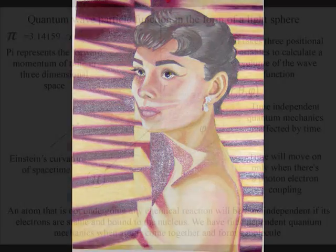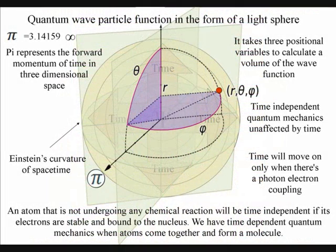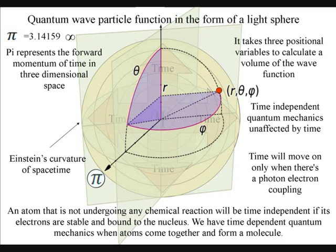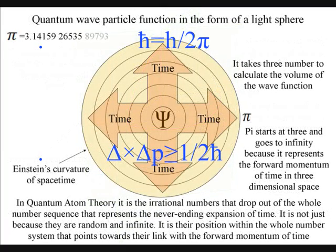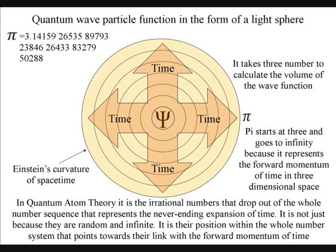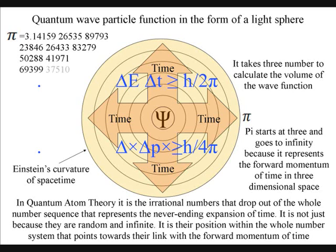We have Einstein's curvature of spacetime because of the spherical shape of the quantum wave particle function. This is why we have pi in the equations representing the shape of the wave function in three-dimensional spacetime. We also have pi in the equation for Heisenberg's uncertainty principle. This is why pi is an irrational number and keeps on going forever, just like time, never forming a regular pattern with all the properties of a random number, just like probability.